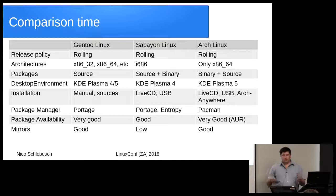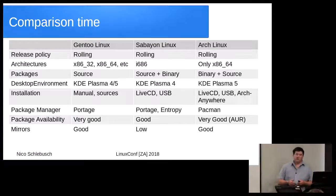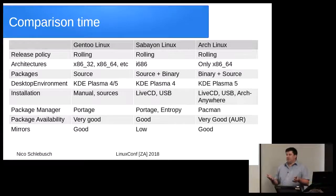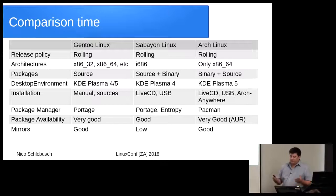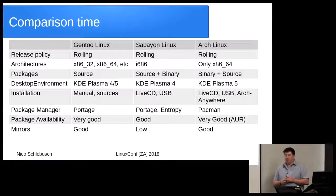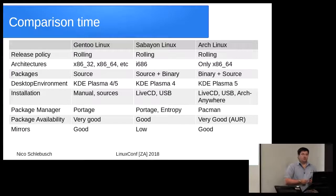Sabayon Linux mostly uses binary packages that are pre-compiled because they only support certain architectures, but if necessary you can compile from source if the package isn't available in the repositories. Arch Linux also distributes pre-built binaries essentially every day, and then from the Arch User Repository you can get software and compile the source code directly.